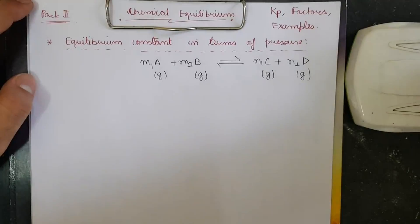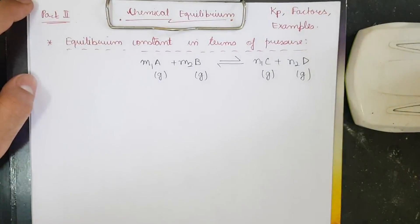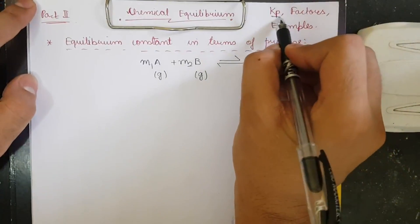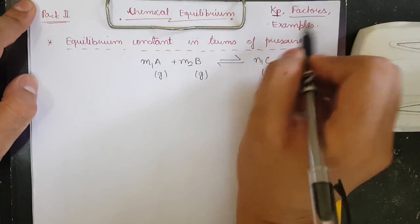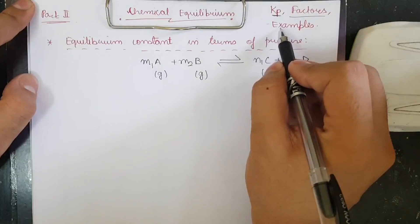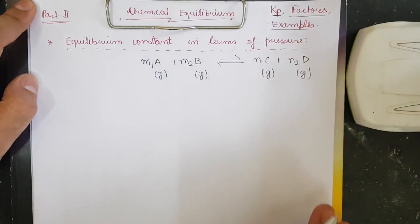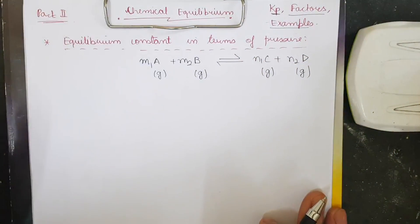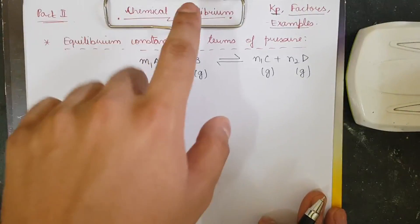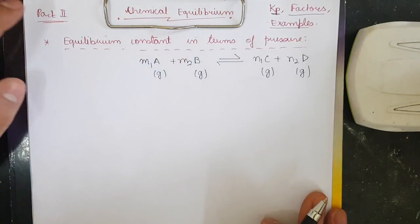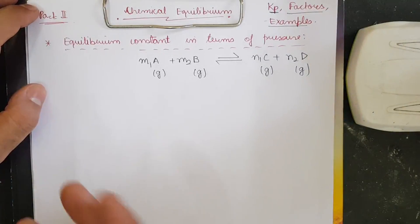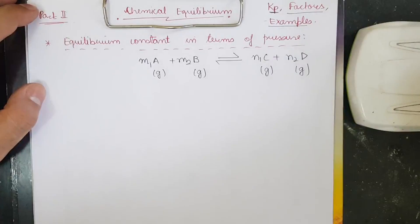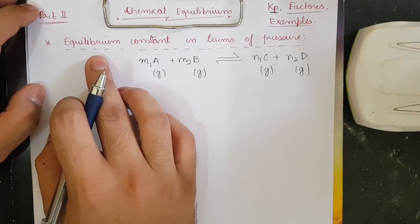Welcome to Part 2 of Chemical Equilibrium. In this video, our major focus will be on Kp, the relation between Kp and Kc, the factors which affect chemical equilibrium, and examples. Before beginning, please watch Part 1 of Chemical Equilibrium where I have dealt with the very important derivation of Kc and active mass, as that is very important.